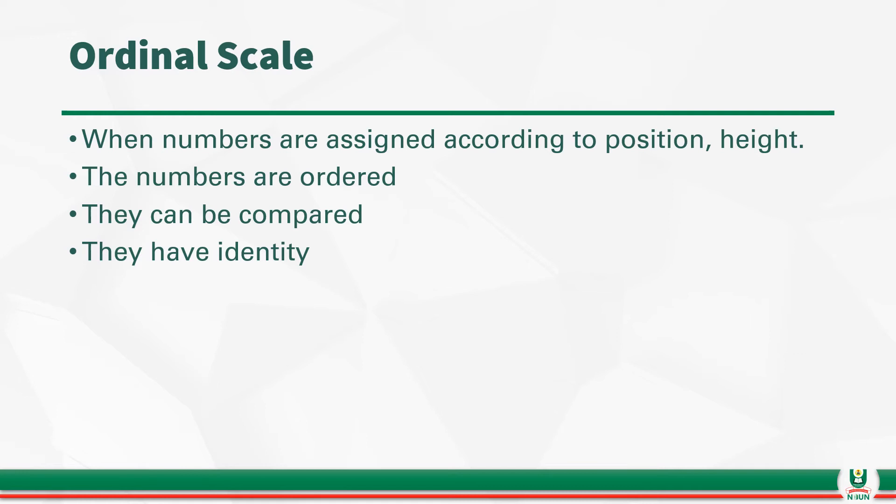The Ordinal Scale. And the numbers in the scores in an Ordinal Scale can be compared. The scores are ordered. The scores have identity. You can now look at the comparison between an Ordinal Scale and a Nominal Scale. You will see some level of advancement in the case of the Ordinal Scale.